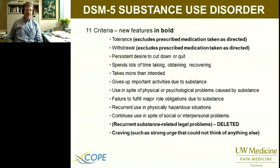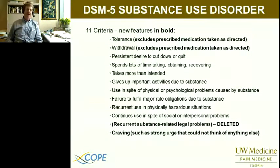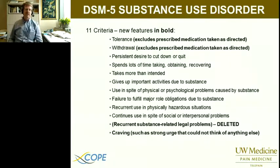So this is the DSM-5 substance use disorder diagnosis. There are 11 criteria, and some of it is new, although mostly it's just a combination of what used to be substance dependence and substance abuse. They basically took all those criteria, took away one — which is substance-related legal problems, which is no longer a criteria — and added one, which is craving. Craving: you can ask patients if they had such a strong urge that they could not think of anything else. That's one way of asking about craving.